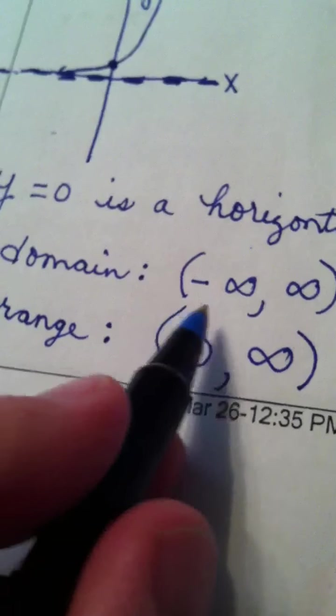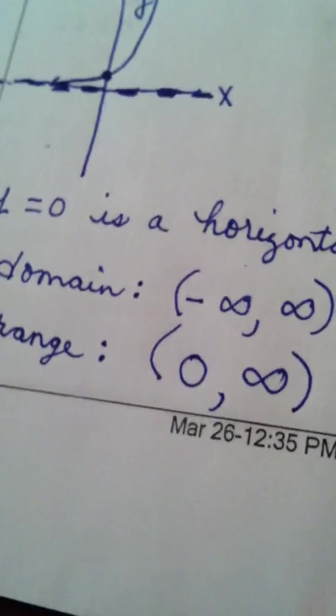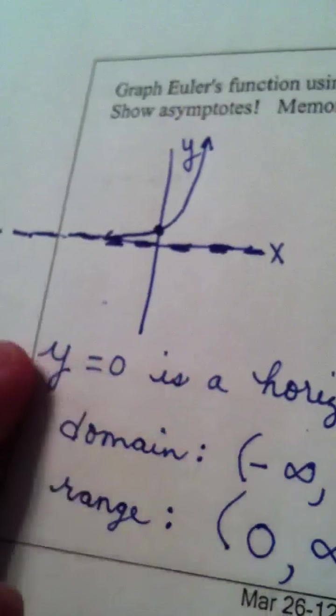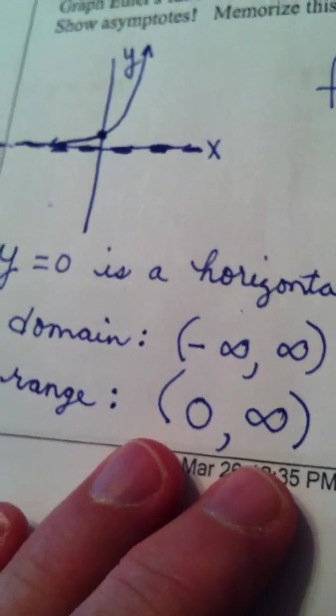But notice what I did. I didn't put a bracket on 0. That's because the graph never actually reaches y equals 0. Y equals 0 is a horizontal asymptote, so the graph hovers above it.